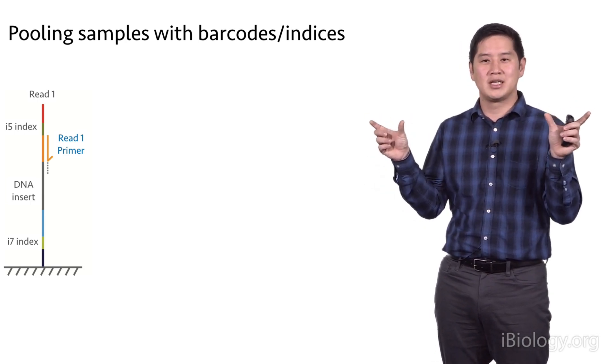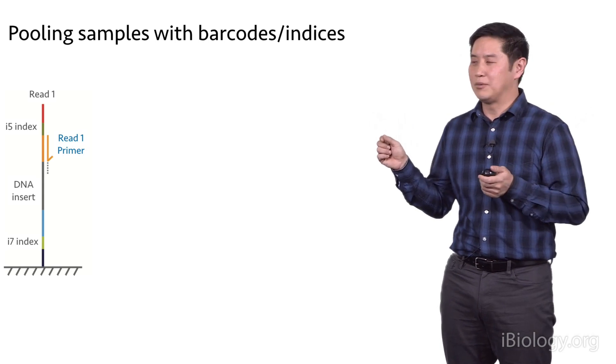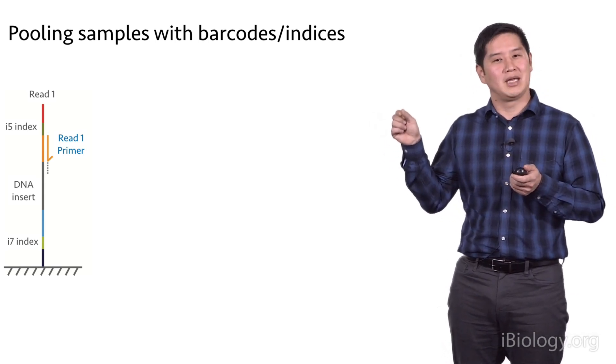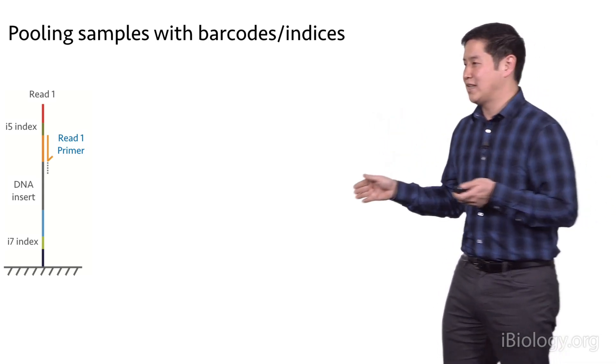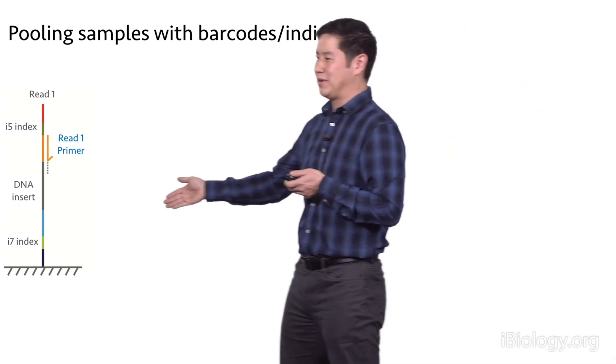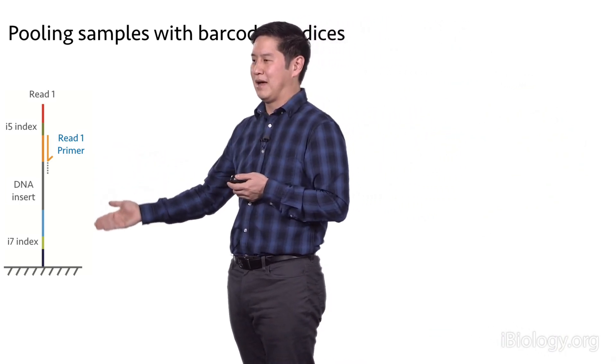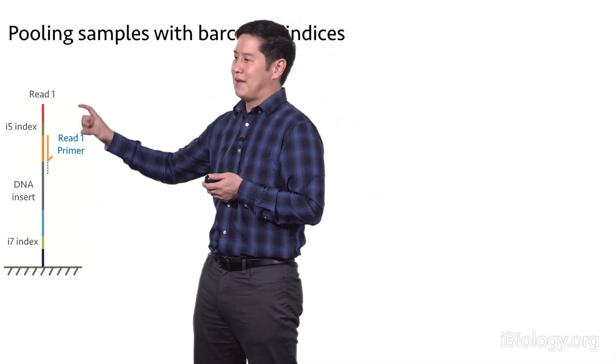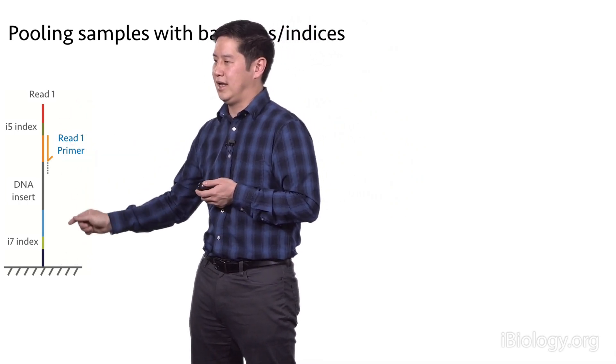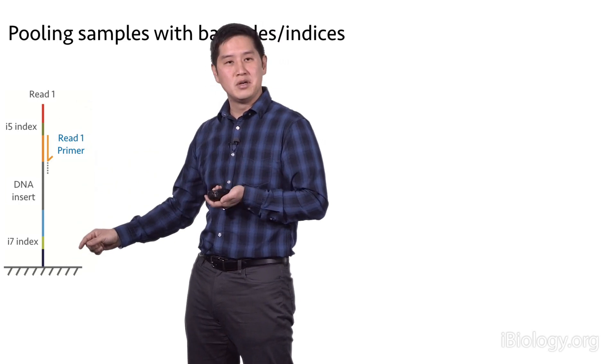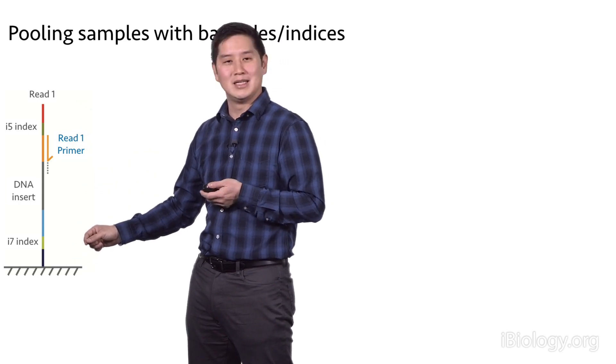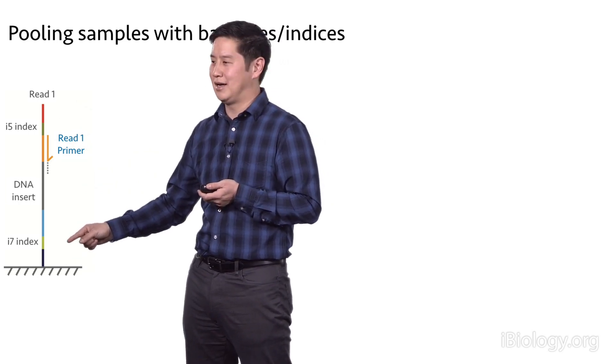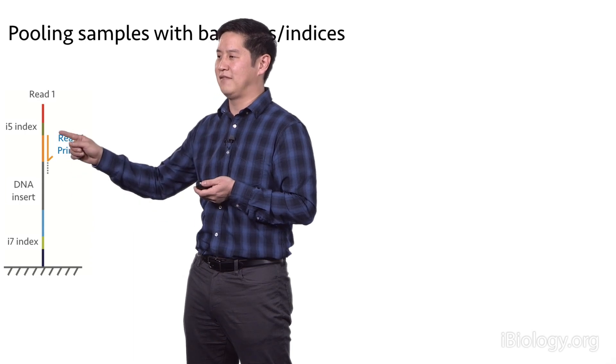One thing you can do with these Illumina sequencing libraries is within those adapters that get added to the ends of your inserts, you can have different barcode sequences so that each sample gets a unique barcode. Let's say we have a sample that's already bound to the flow cell. The adapters are here and here. We can add two different barcodes or index sequences onto these Illumina libraries—they're called the i7 and the i5 sequences.